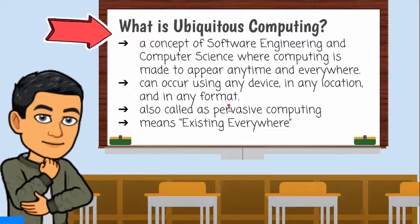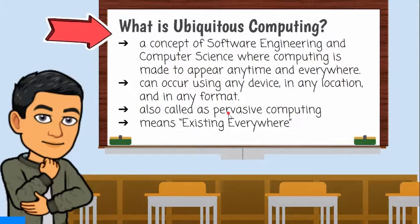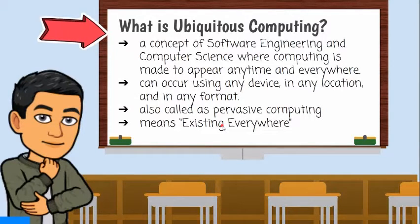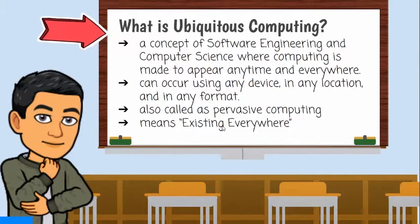This is also known as pervasive computing. The terms ubiquitous and pervasive both mean existing everywhere. This is a post-desktop model of human-computer interaction in which information processing has been thoroughly integrated into everyday objects and activities.